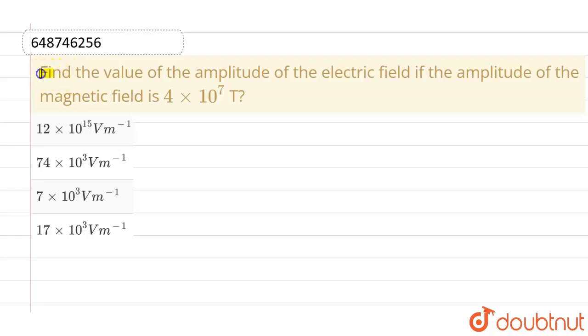Hello everyone. If we talk about this question, the given question is: find the value of amplitude of the electric field if the amplitude of the magnetic field is 4×10⁷ Tesla. And these are the given options.